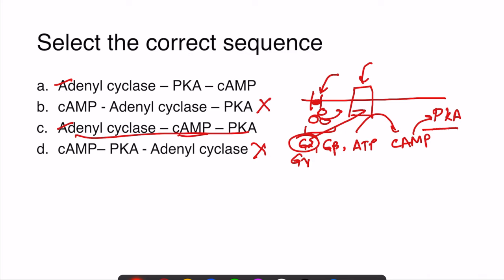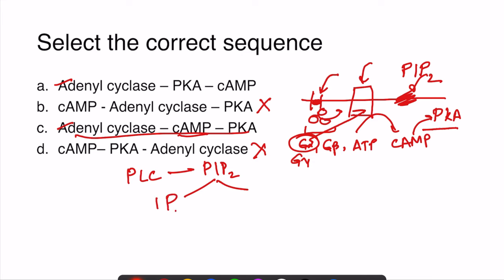There is another pathway: activation of phospholipase C. Phospholipase C acts on the membrane lipid phosphatidyl inositol phosphate 2 (PIP2) and breaks it down into inositol triphosphate (IP3) and diacylglycerol (DAG), with further downstream action. This pathway may also be asked in future questions, so you should know this sequence as well.